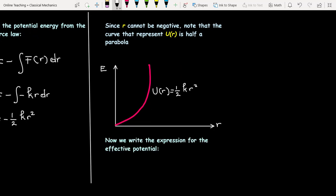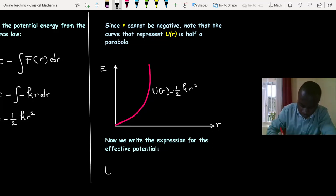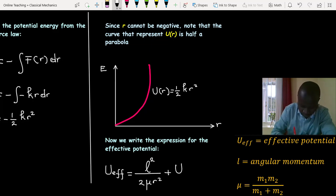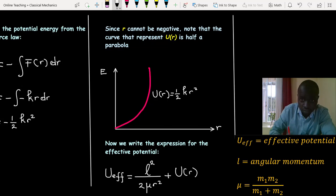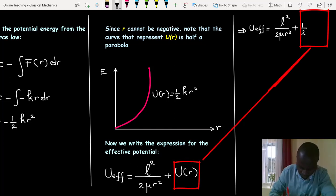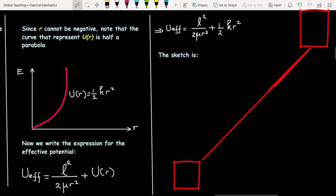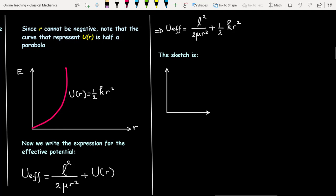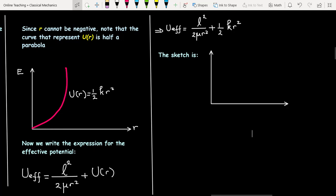Now we write the expression for the effective potential. L represents the angular momentum while mu represents the reduced mass.